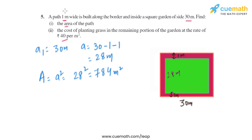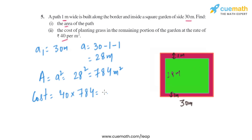Now we find the cost of planting grass in that area. The rate given in the question is rupees 40 per square meter, and the area is 784 square meters. Multiplying them: 40 × 784 gives us rupees 31,360. That is the cost of planting grass in the remaining portion of the garden.